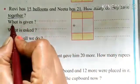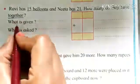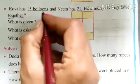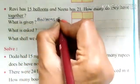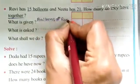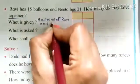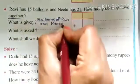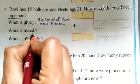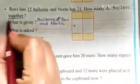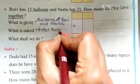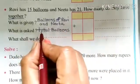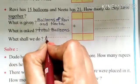So let us go step by step and complete this information. What is given? What is given here? Balloons of Ravi and Nita. Then what is asked? What is asked? How many do they have together? Means total balloons. And for getting total balloons, what shall we do? Kya karna hai hame? Yes, that is to add.